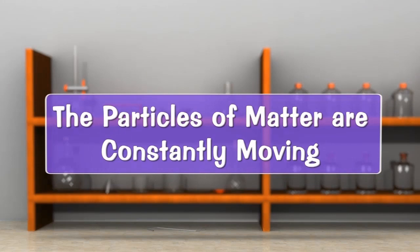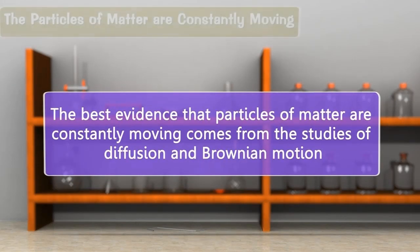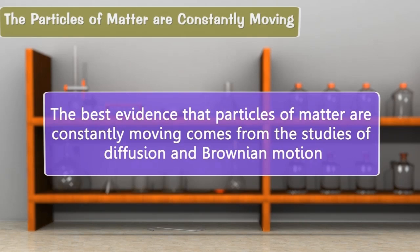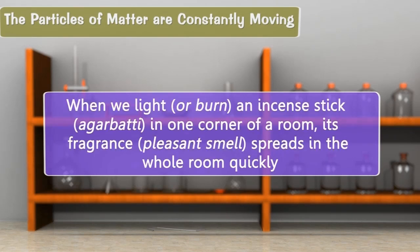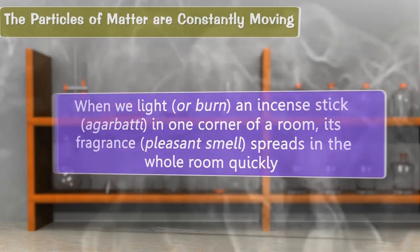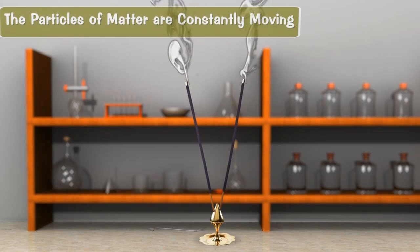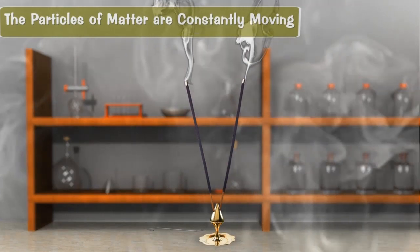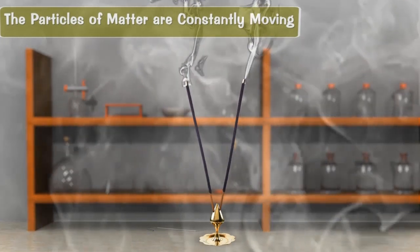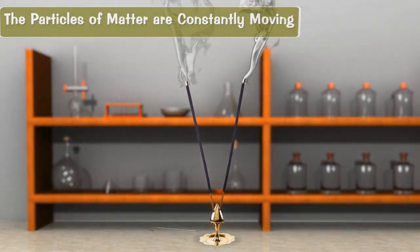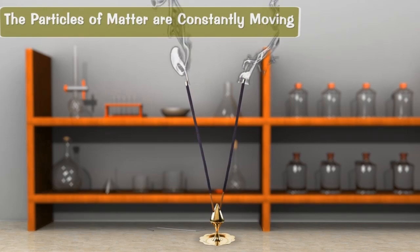The particles of matter are constantly moving. The best evidence that particles of matter are constantly moving comes from the studies of diffusion and Brownian motion. When we light an incense stick in one corner of a room, its fragrance spreads in the whole room quickly. The particles of gases produced by the burning of incense stick move rapidly in all directions, mix with the moving particles of air in the room and reach every part of the room quickly. This tells us that the particles of matter are constantly moving.